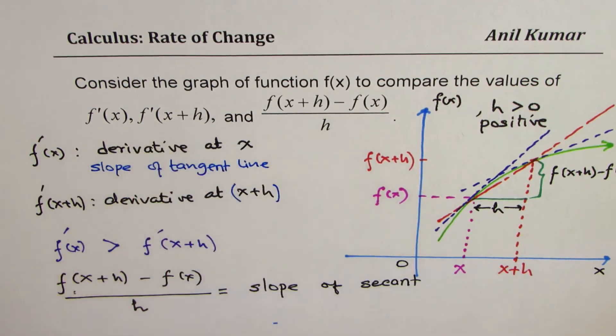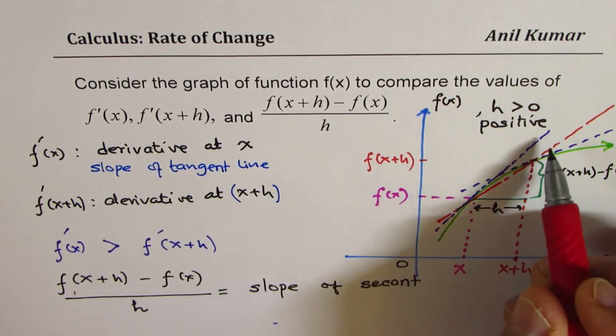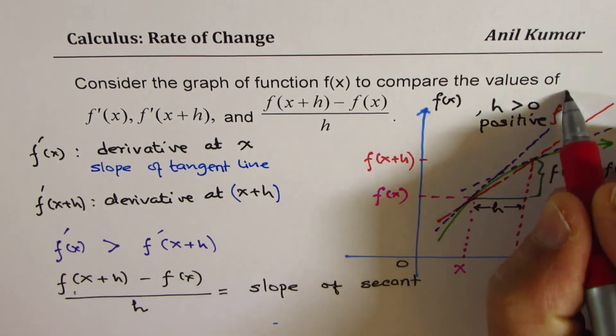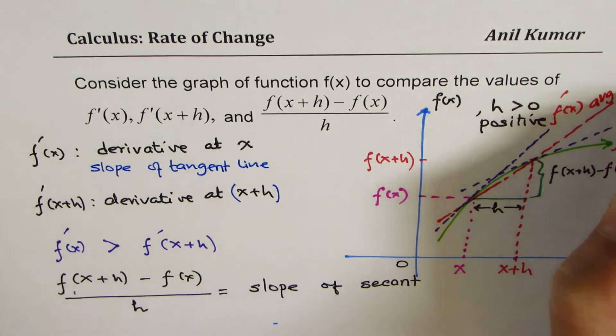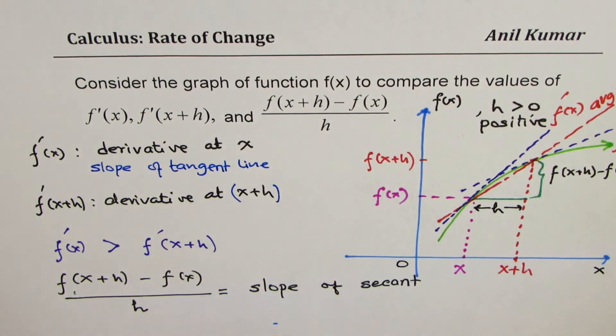So if you're comparing all three of them, then what is the relation? Let's write it down. So we have that the maximum gradient, this represents f'(x), that represents f'(x+h). And this is, let me call this as secant. So we say average rate of change. So that is how they relate.